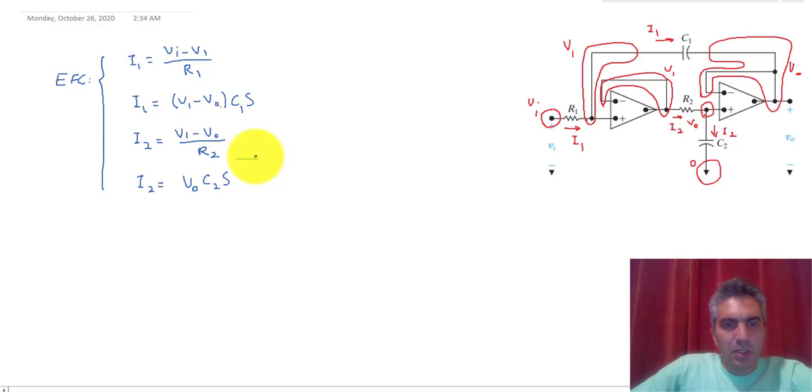So I can equate these two by each other and calculate Vout as a function of V1. So Vout over V1 ends up being 1 over C2s divided by 1 over C2s plus R2, which is 1 over R2C2s plus 1.